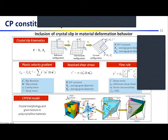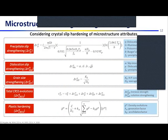We have the CPFEM model which includes crystal morphology and grain texture as part of the crystalline material representation. The physics-based model includes the slip strengthening effects of precipitate phases, dislocation density, and grain size. Finally, the total critical resolved shear stress, which is the slip strength, is the summation of each of these slip strengthening effects. Plastic hardening includes the variation of dislocation density during plastic deformation, related to the current dislocation density and the grain size.